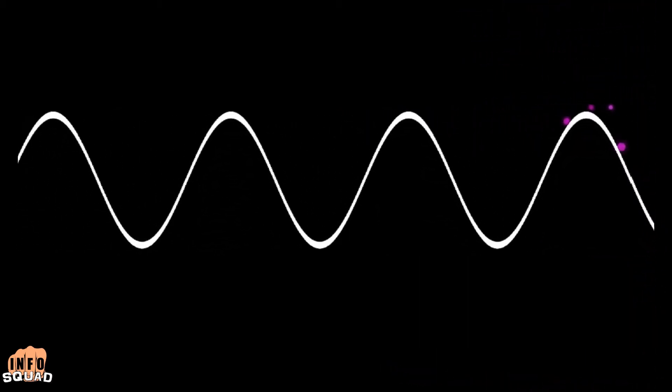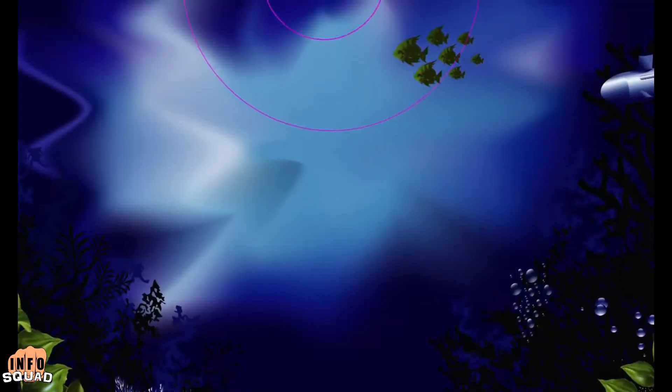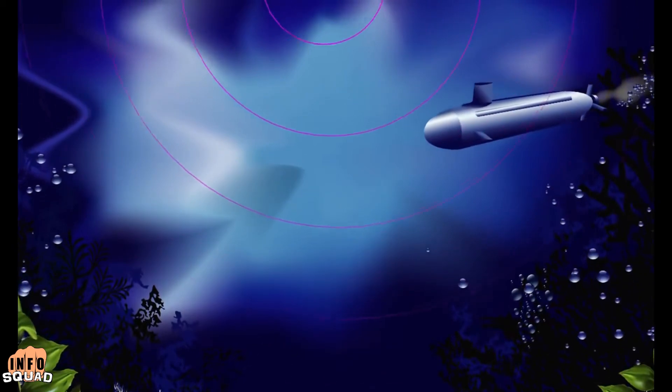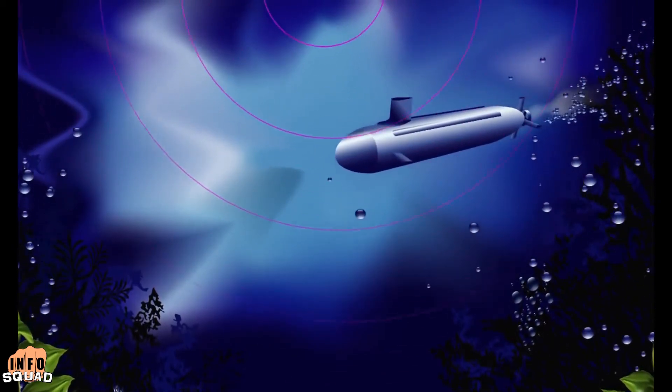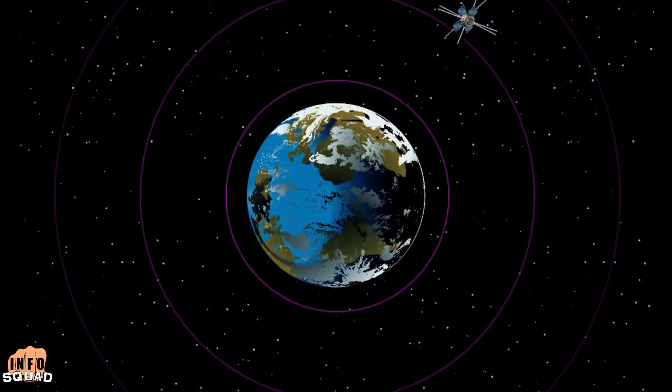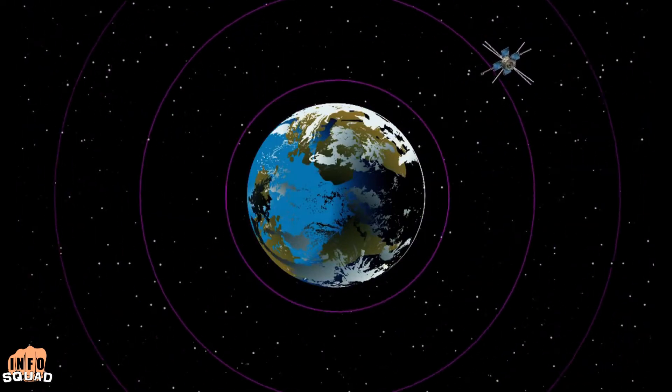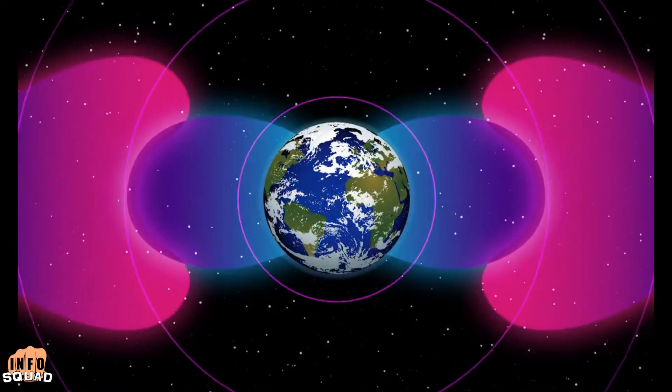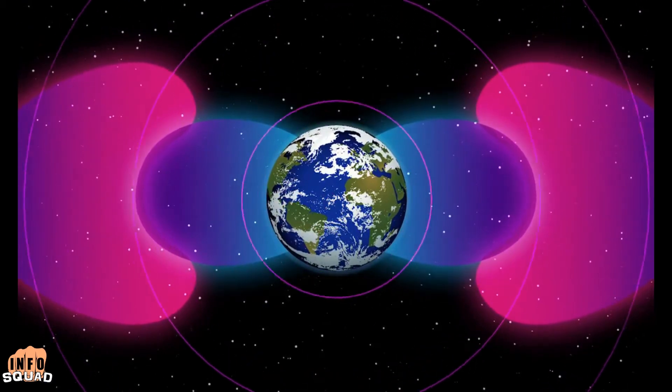Experiments have shown VLFs affect the properties of high-energy radiation that surrounds the Earth. Very low radio frequencies fall in the range of 3 kHz to 30 kHz. This band is known as the Myriameter Frequency Band.